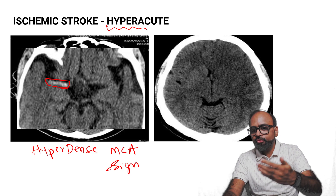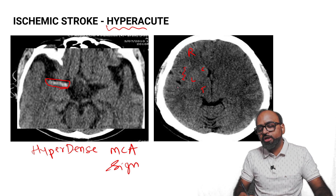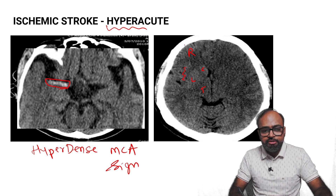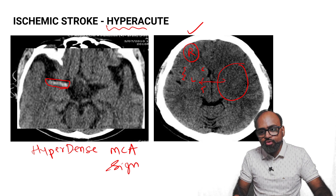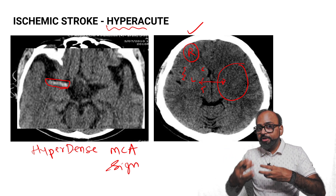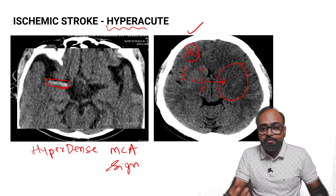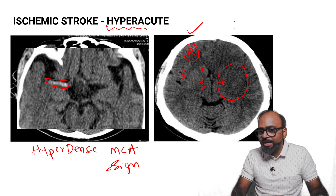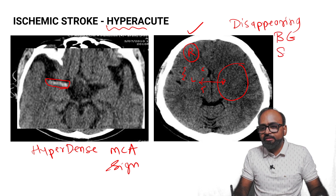Now in a different patient, if you look at this CT scan, you can see on the right side the caudate nucleus, lentiform nucleus, thalamus, insular cortex — gray-white matter distinction is present. But on the left side in the same corresponding area, there is no gray-white matter distinction. Why? Because the brain parenchyma is getting affected, so the distinction is lost. The basal ganglia has disappeared — this is called the disappearing basal ganglia sign.